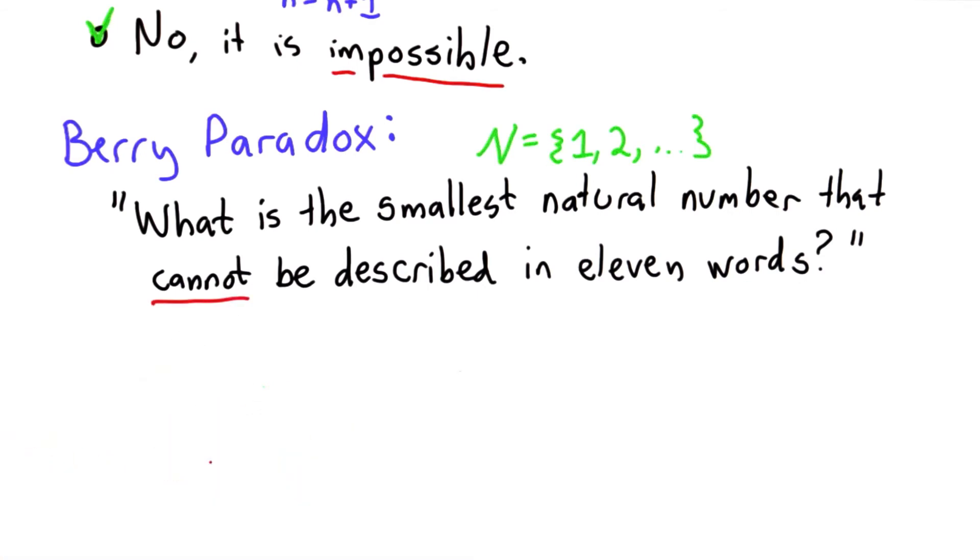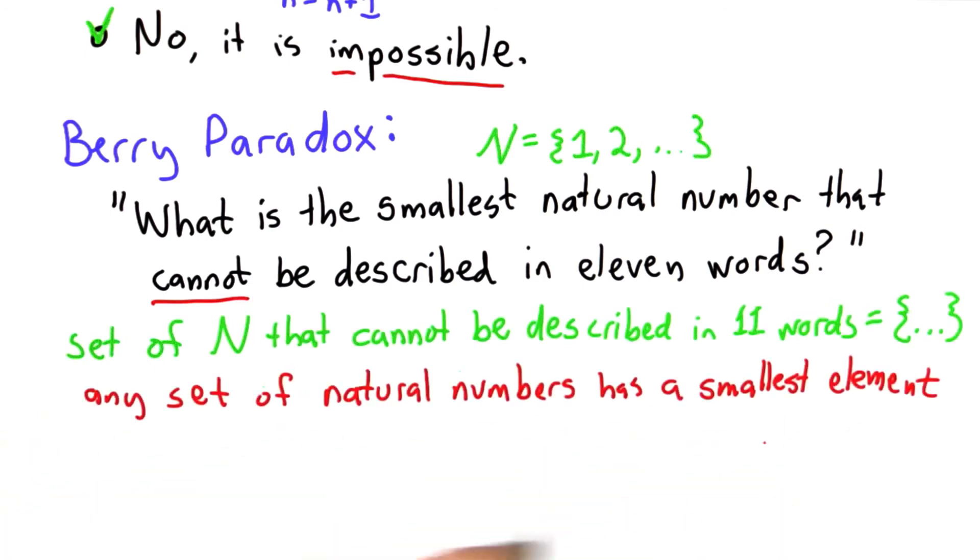So this seems like a reasonable question. We can define the set of numbers that cannot be described in 11 words. Seems like a perfectly reasonable description of a set. It's also the case that any set of natural numbers has the smallest element.